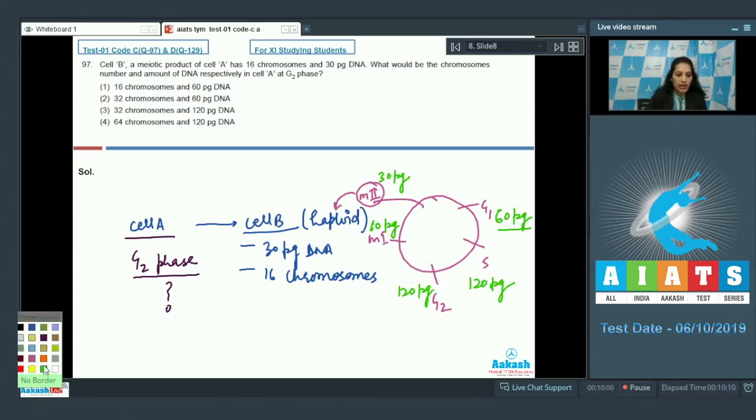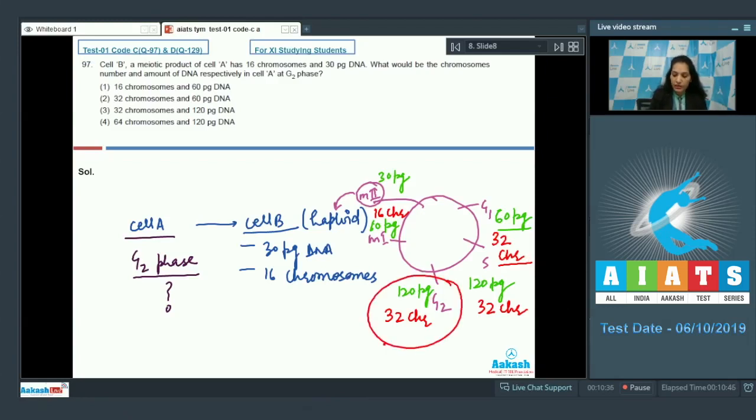What about the chromosome number? If after M2 it is 16 chromosome number, the chromosome number reduces in the M1 only. So after M1 also it would have been 16 only, and in the G2 stage it would have been 32 chromosomes. S phase 32 chromosomes, in G1 also 32 chromosomes. Is there any option which is matching with this, that in G2 phase the DNA content is 120 picogram and the chromosome number is 32? These two options are ruled out and the correct option should be the third one.